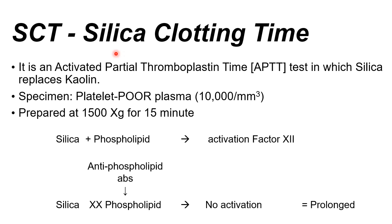As a recent modification, silica replaces partial thromboplastin time as one of the parallel assays. The specimen is PPP. Silica plus phospholipid as reagent would activate factor 12. If antiphospholipid antibodies directed against the phospholipid reagent are present, factor 12 cannot be activated, resulting in a prolonged clotting time. That concludes the last slide — questions from this handout will be integrated into the pre-final examination, covering disorders of fibrinolysis, instrumentation, and pre-final practicals.